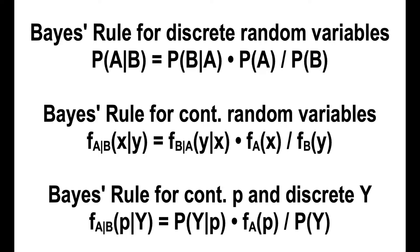You likely have seen it for two discrete random variables or two continuous random variables, but we're going to use the one with one continuous and one discrete random variable.